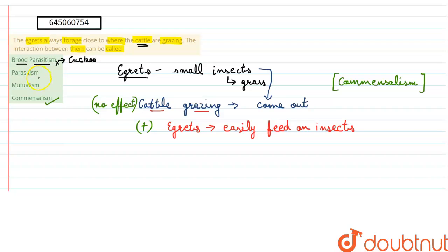Parasitism is when one partner is benefited and the other is being harmed. Then this situation is called parasitism.